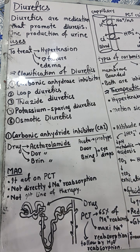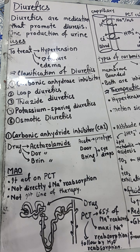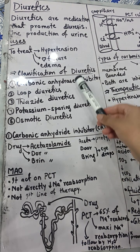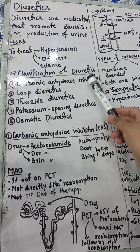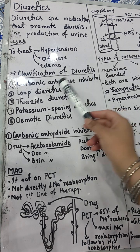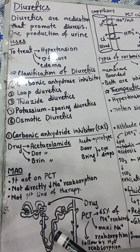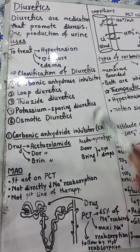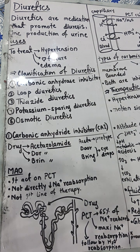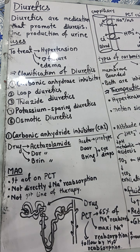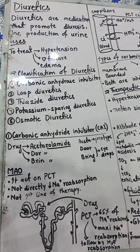CAI acts on the PCT — the proximal convoluted tubule. In order, the five diuretic classes act on: first, PCT; second, the loop of Henle; third, the thick ascending loop of Henle; fourth, the early distal convoluted tubule; and fifth, osmotic diuretics act on the late distal convoluted tubule.